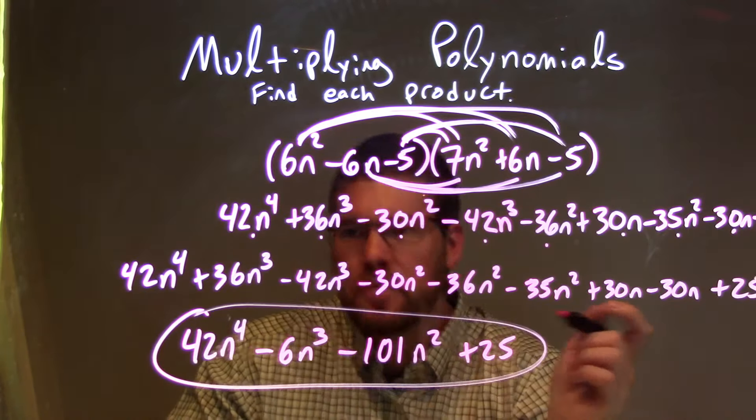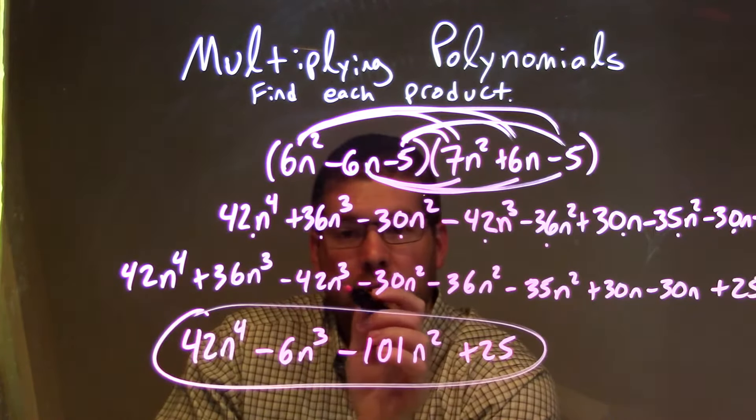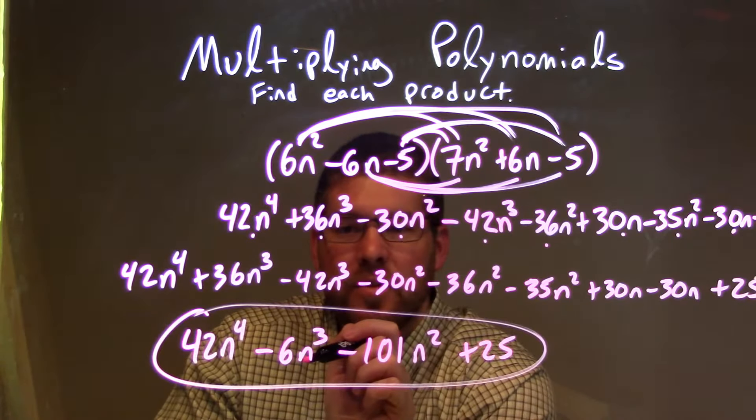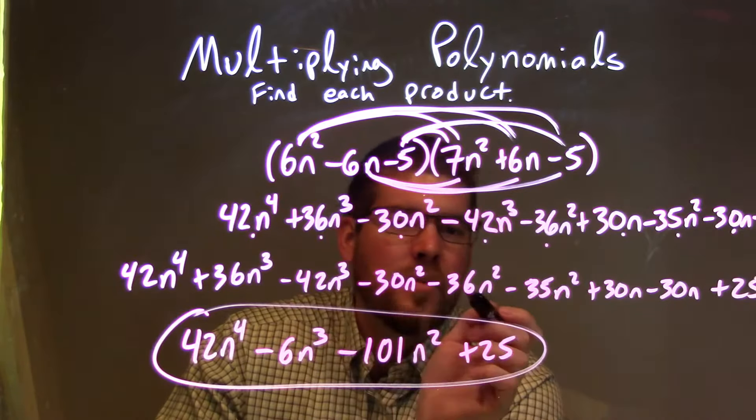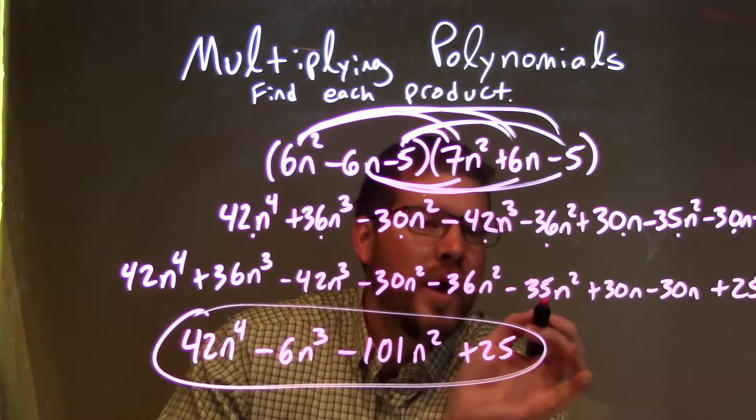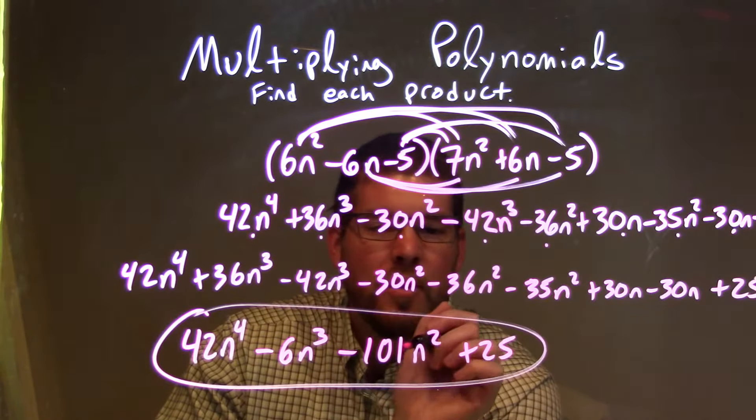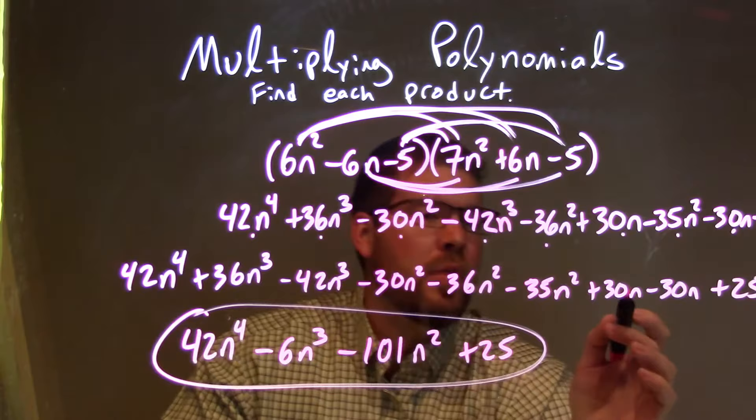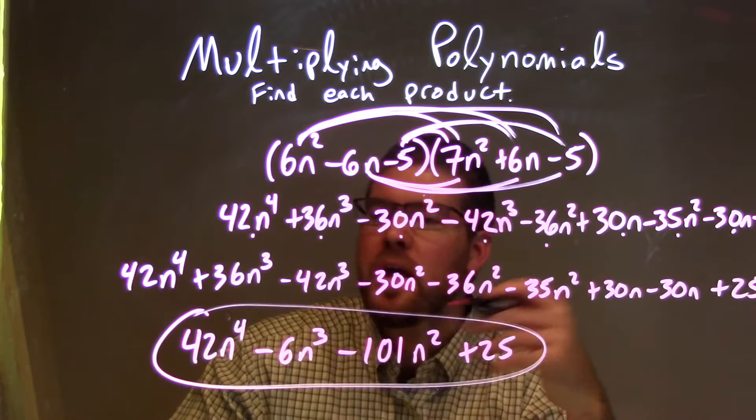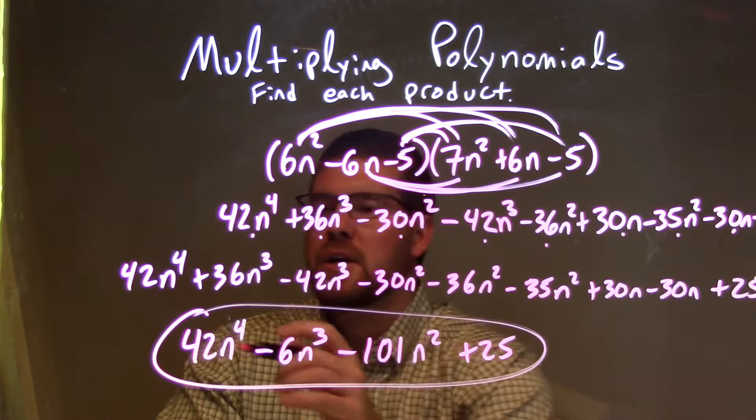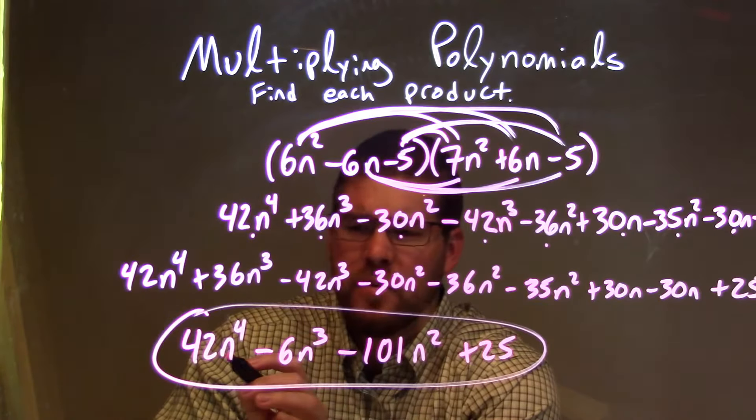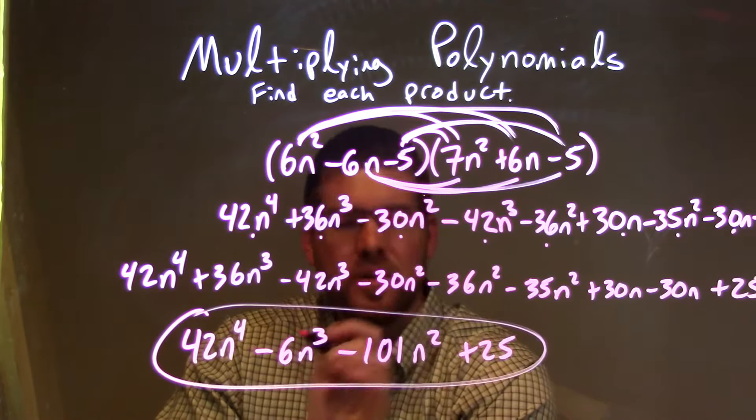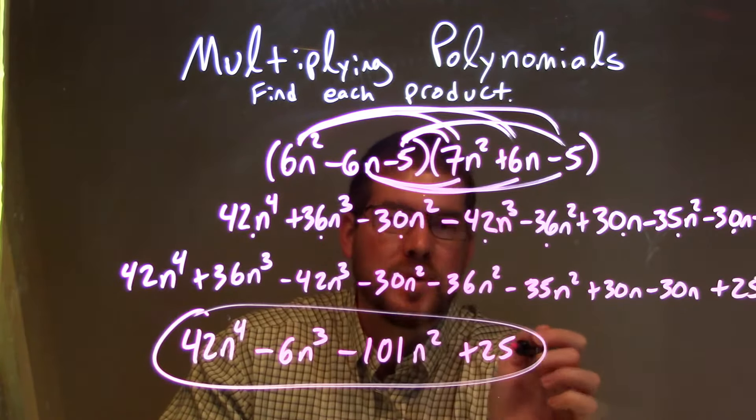We then combine our like terms. 36n to the third minus 42n to the third was a minus 6n to the third. And minus 30n squared, minus 36n squared, minus 35n squared was a minus 101n squared. And then our 30n minus 30n eliminated, giving us our final answer here of just 42n to the fourth, minus 6n to the third, minus 101n squared, plus 25. Thank you.